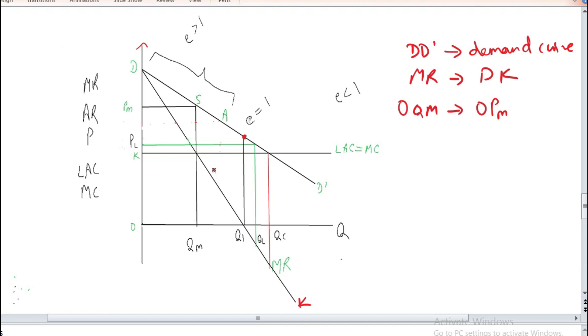Below M a price will be set, say E. PL is the limit price set by the firms and at this price OQL quantity will be produced. OPL price and OQL quantity of the commodity will be produced.